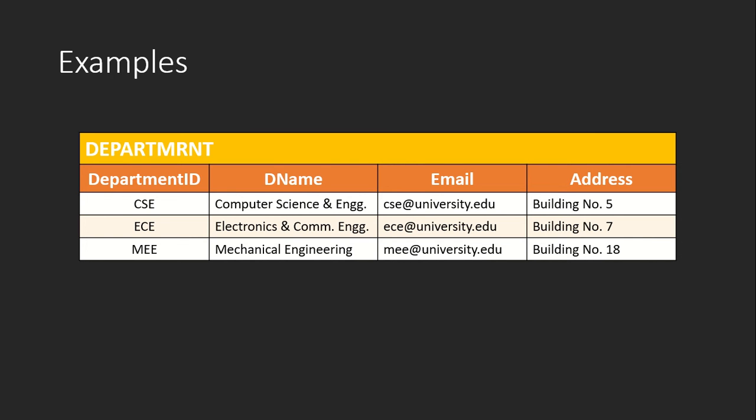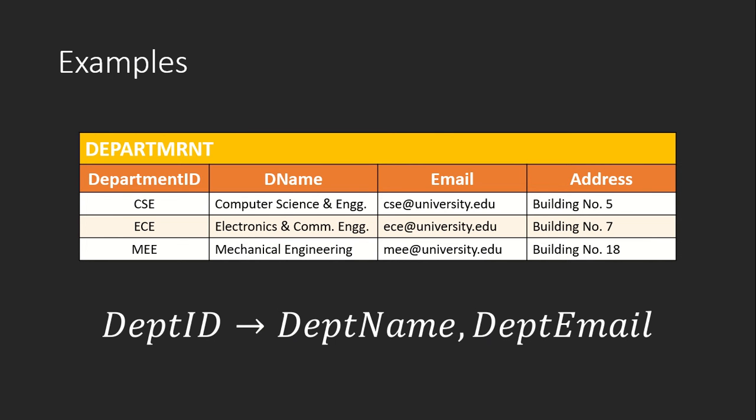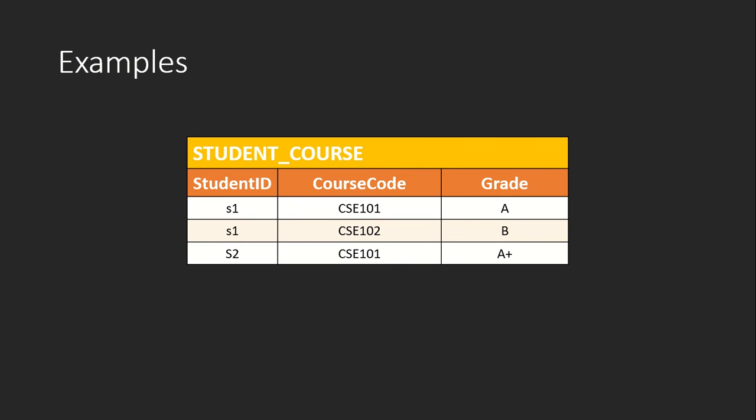Another example: we have a department table with attributes department ID, department name, email, and address. We may have a functional dependency like department ID → department name, department email. That means department name and department email can be identified by, or are dependent on, department ID.